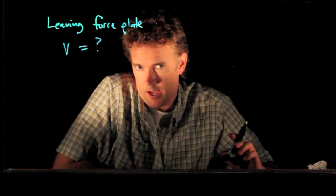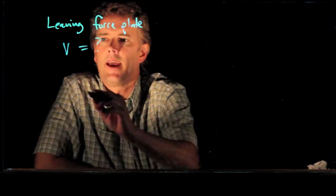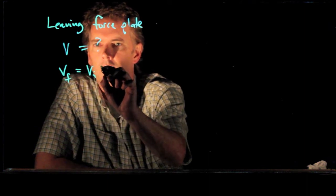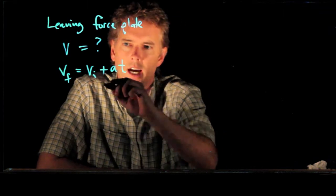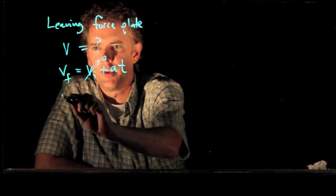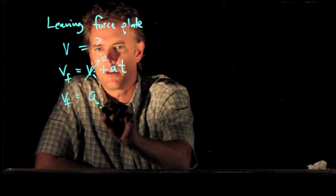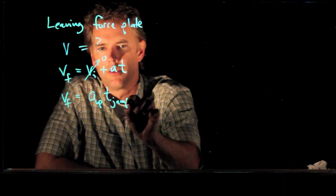All right, for that we can go back to our kinematic equations. And we know that Vf equals Vi plus At. Vi is zero, she starts from rest on the ground, and so Vf in this case is just the acceleration going up times the time that it took her to do that jump.